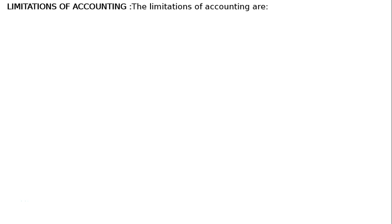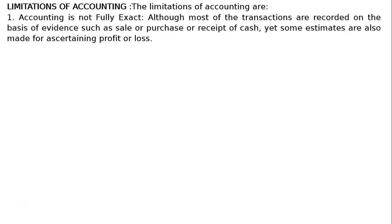The limitations of accounting. There are five limitations. The first one is accounting is not fully exact. Although most of the transactions are recorded on the basis of evidence such as sale, purchase, or receipt of cash, yet some estimates are also made for ascertaining profit or loss. Hence, accounting is not fully exact.